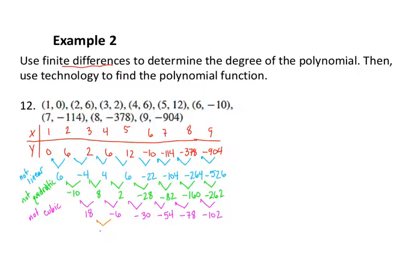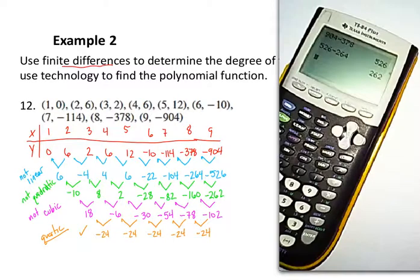Negative 6 minus 18 is negative 24. Negative 30 minus negative 6, also negative 24. This is looking good. Negative 54 minus negative 30, negative 24. Negative 78 minus negative 54, negative 24. Negative 102 minus negative 78, negative 24. So that one checks out. Our differences were the same once we got to the fourth level. So this is a quartic function. And again, we know it's quartic, so we don't have to do any work with plotting points.